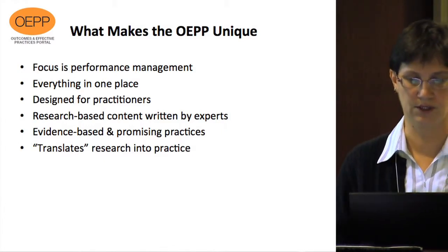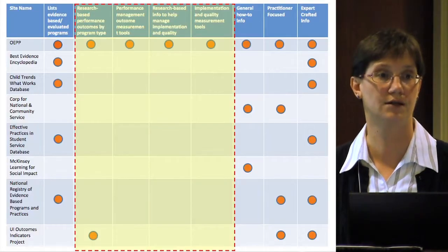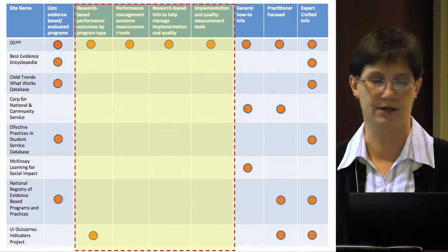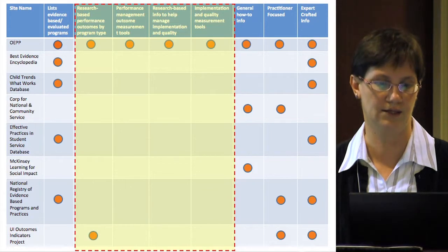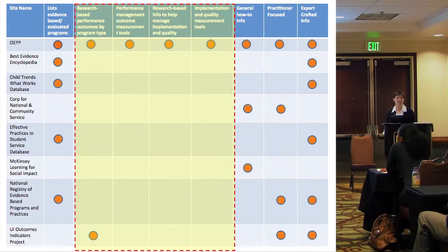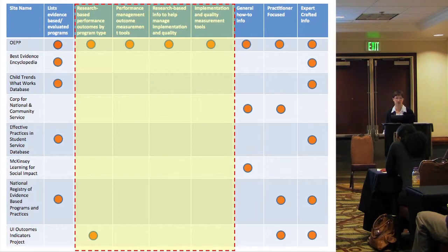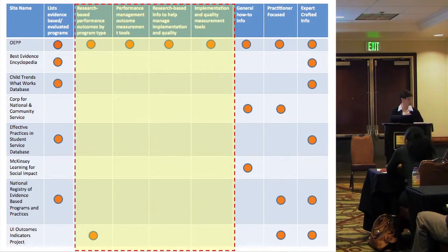It's kind of like a warehouse — everything's going to be in one place. You're going to have outcomes, indicators, measurement tools, tips around how to use those tools, and effective practices: what does a good quality program look like, how do you identify your target audience? It's designed for practitioners. It will include research-based content written by practitioners and reviewed by experts, and includes both evidence-based and promising practices. We're trying to help you better translate research into practice.